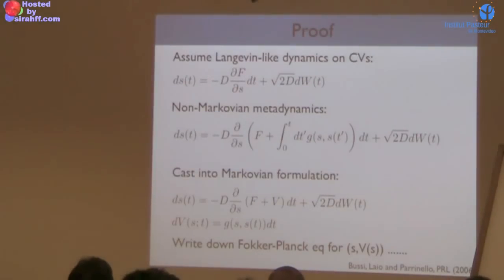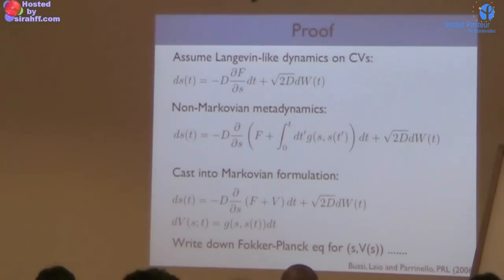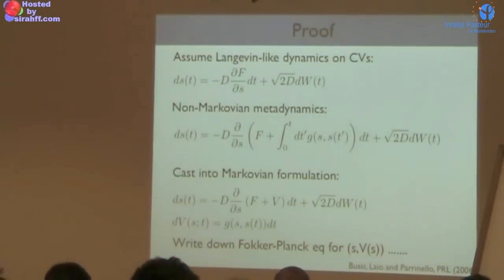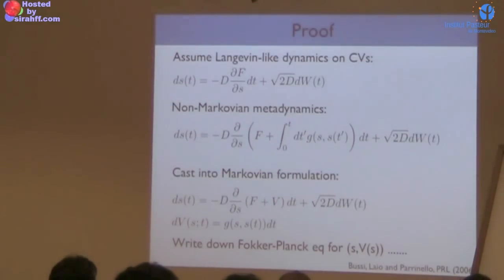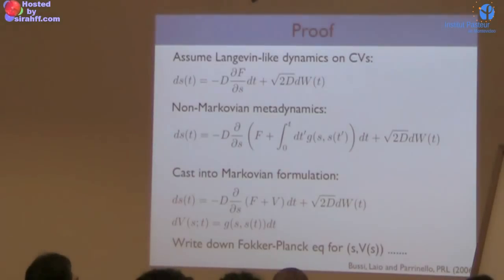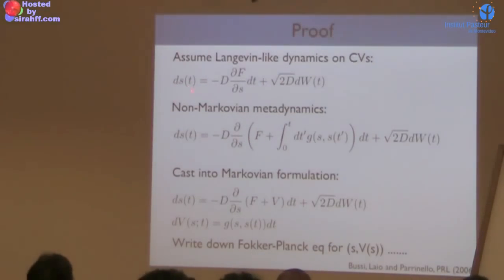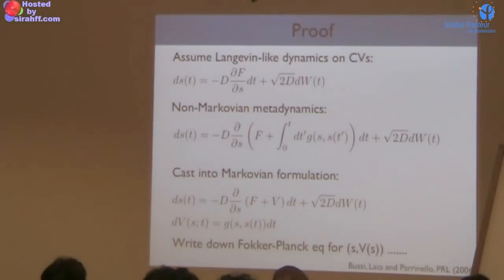It's very important to have a theoretical foundation for these empirical observations. What we did was develop the dynamics of s, the collective variable, and check whether with reasonable assumptions we can prove that V becomes very close to minus F. We developed a formula for that. The idea is to make an assumption — which is the real limitation of this work — that the dynamics of s follow Langevin dynamics. Then you plug this into the real dynamics with F plus V, which is the free energy plus the history-dependent potential.